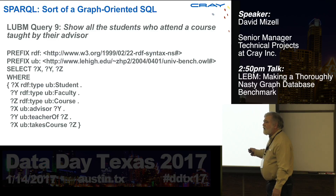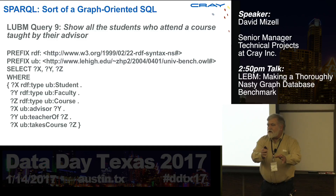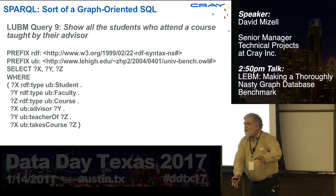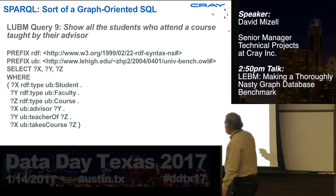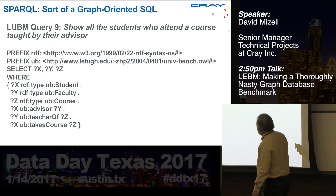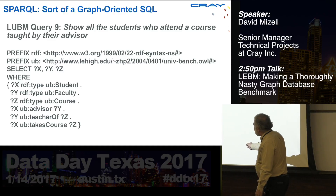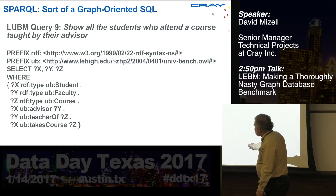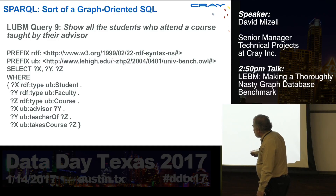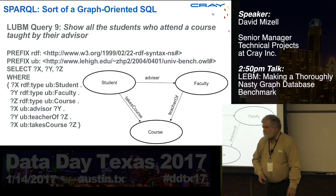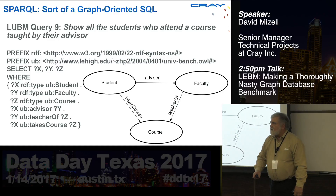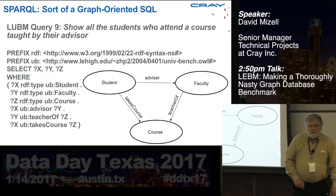This is one of the more complex ones — Query 9 — which says: show me all the students who are taking a class taught by their advisor. You see prefix abbreviations so instead of writing out the full URL, you abbreviate it. It looks like a SQL query: select X, Y, Z where they are all of type student, faculty, and course, and X has advisor Y, Y teaches course Z, and X takes course Z. You're looking for a triangular relationship — implicitly a three-way join that gets expensive quickly.